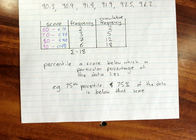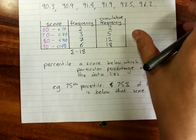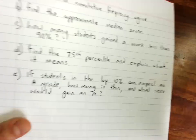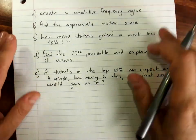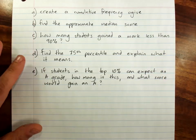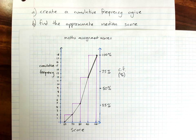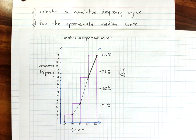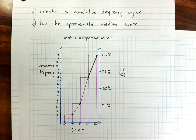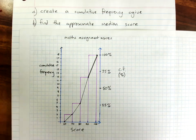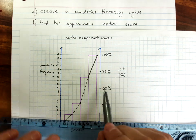So, some questions to tackle about this data. We created a cumulative frequency ogive. Finding the approximate median score. This is one really useful thing about a cumulative frequency ogive. It's really easy to find the median because the median is between the top and the bottom 50% of the data.